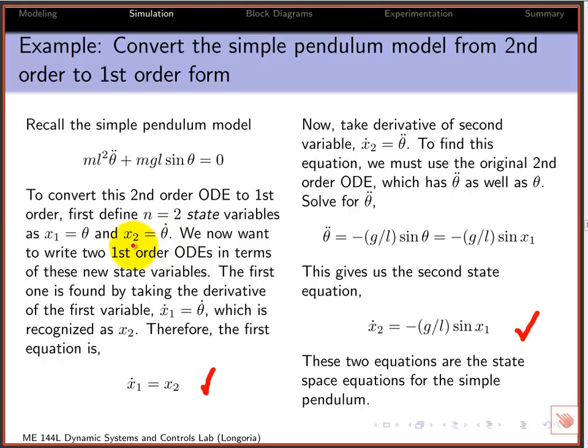Now you just write new state equations, derivatives of those states. So x dot 1 is just theta dot. The theta dot we defined as x2, the new state. So here's the first state equation. The second one is just x double dot, which we find from the original equation. That's the highest derivative that we can find, and then we just make substitutions, and you come up with your second equation here.